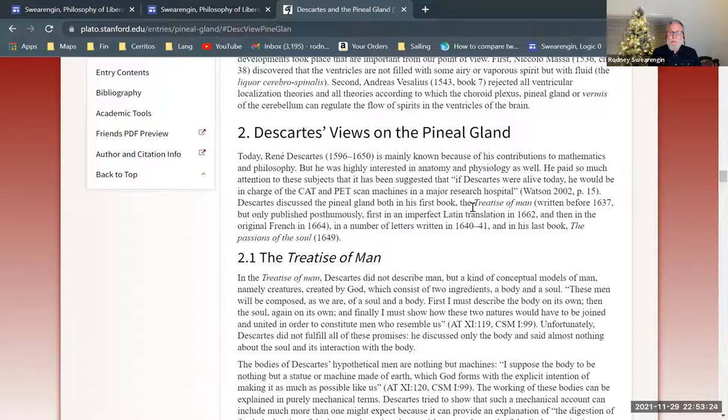Descartes discussed the pineal gland both in his first book, The Treatise of Man, written before 1637, before the Discourse on the Method, but only published posthumously after he died, first in an imperfect Latin translation in 1662, and then in the original French in 1664. A number of letters written in 1640 to 1641, and in his last book, The Passions of the Soul, 1649.